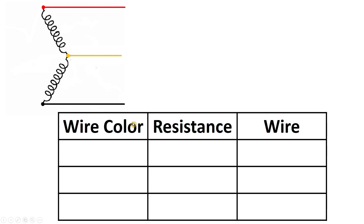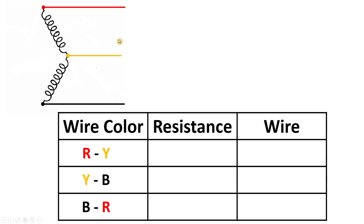Now we have to measure resistance. First, between the red wire and the yellow wire, measure the resistance and note down the value. The color coding I am telling you here — you must not stick to it, as ceiling fans of different companies may have different color coding. I changed the color coding so that you don't get fixed on a particular one. Always first identify wires through testing, then go for proper connection. Between red wire and yellow wire, for now I assumed I got 193 ohm resistance.